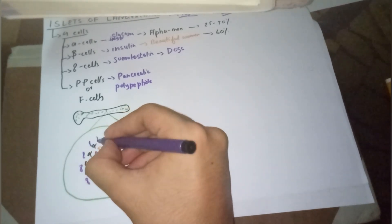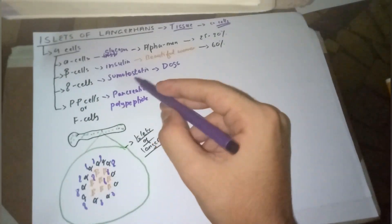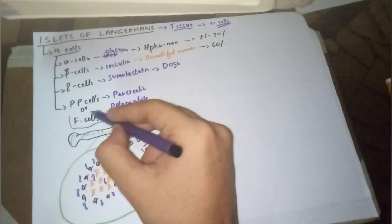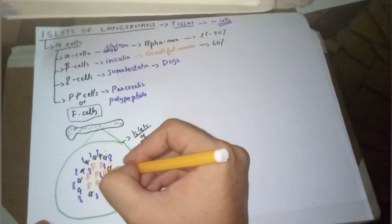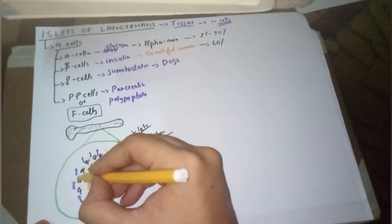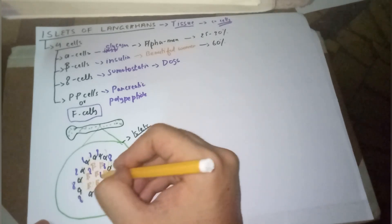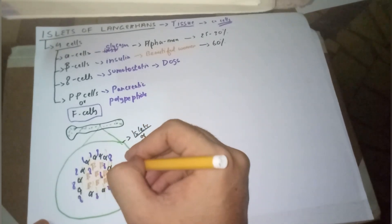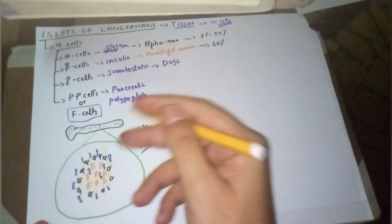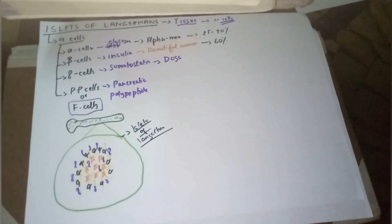As for the F cells — the PP cells — they are also present everywhere: between the delta cells, between the beta cells, and between the alpha cells. F cells are present everywhere throughout the islet.